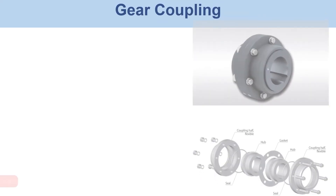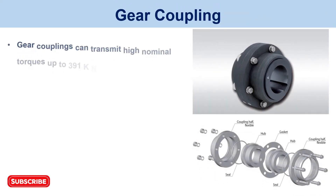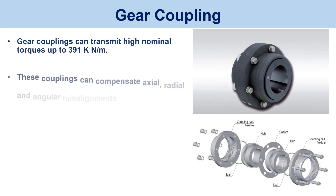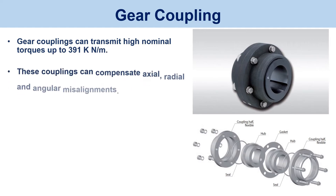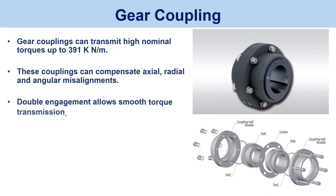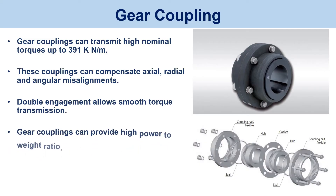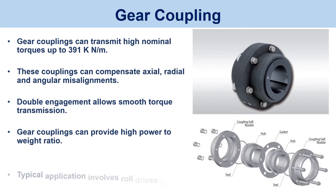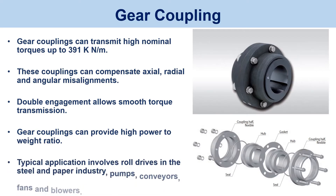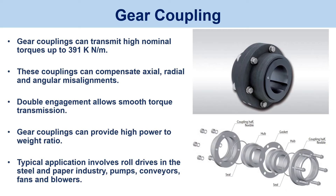Gear coupling. Gear couplings can transmit high nominal torques up to 391 kNm. These couplings can compensate axial, radial, and angular misalignments. Double engagement allows smooth torque transmission, and gear couplings can provide a high power-to-weight ratio. Typical applications involve roll drives in the steel and paper industry, pumps, conveyors, fans, and blowers.